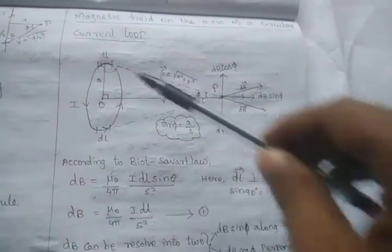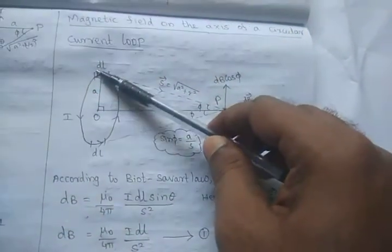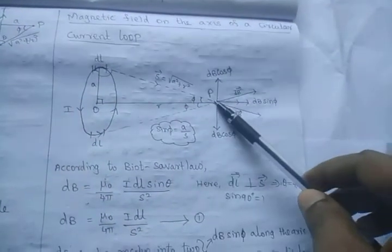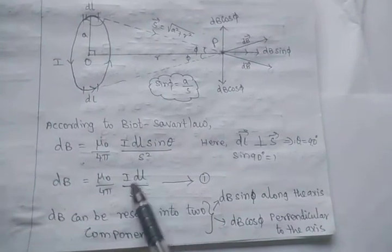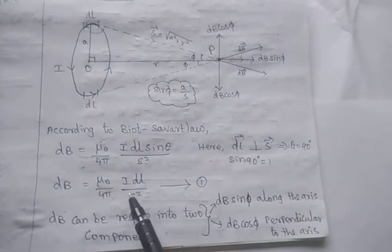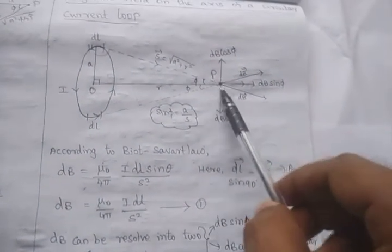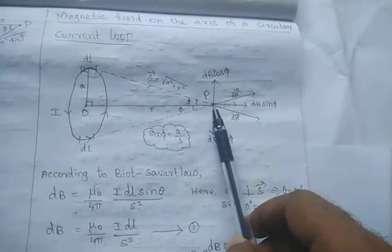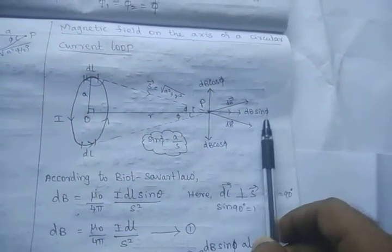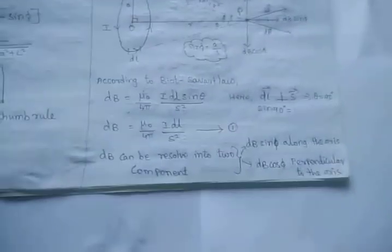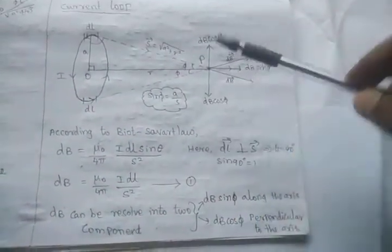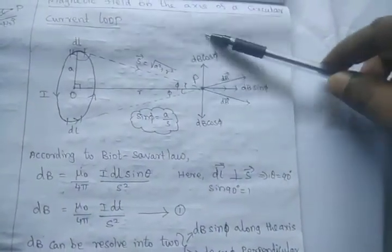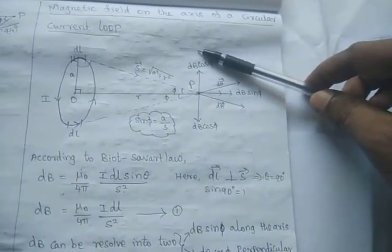For the small elemental length, at the point P, the magnetic field is dB = (μ₀/4π) × I dl / S². But this magnetic field is resolved into two components: dB sinθ and dB cosθ components.